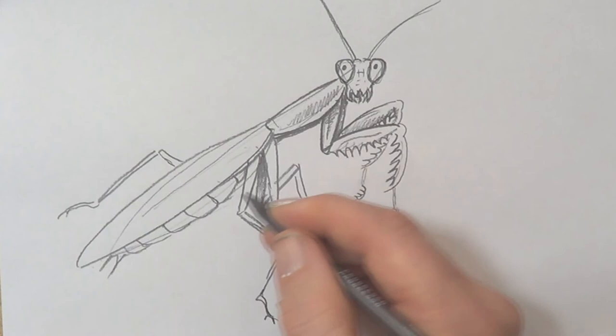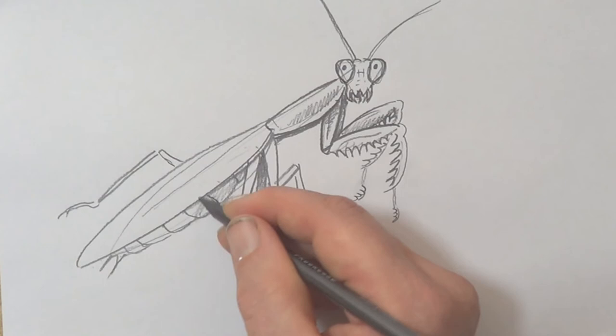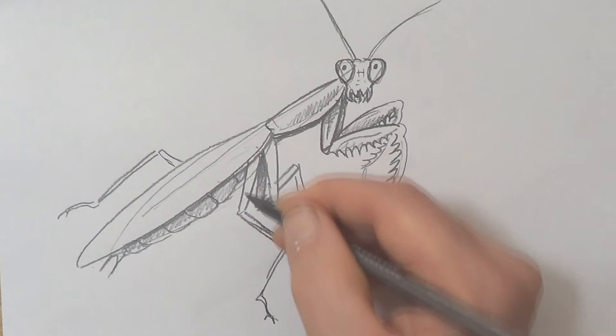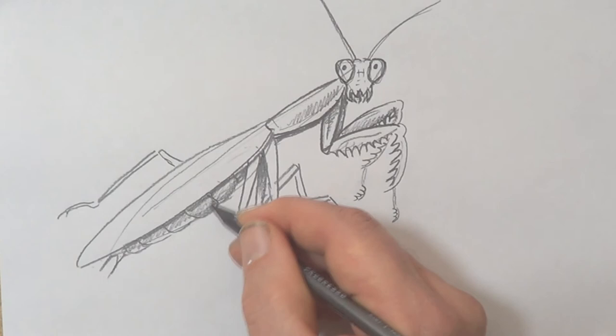Now here, the abdomen. We're going to shade the whole thing very, very gentle. Underneath the wing, we're going to make it a bit darker. Now under each of these segments, we're going to make it a little bit darker.